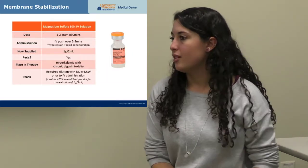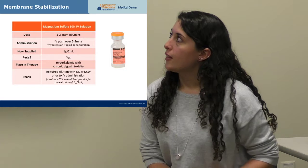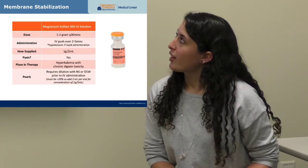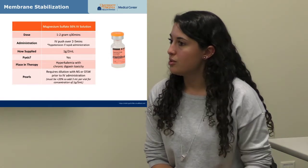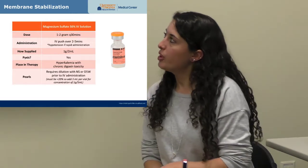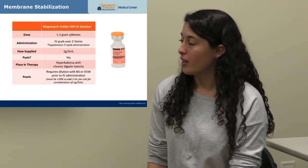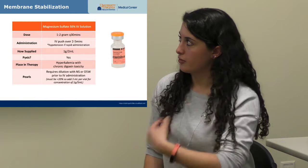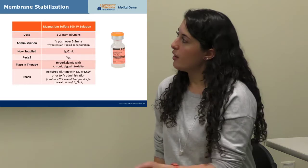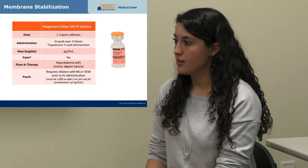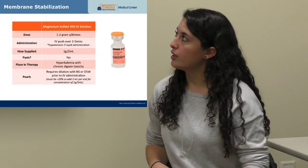If hyperkalemia is caused by digoxin toxicity, use magnesium sulfate for membrane stabilization instead. The vial is a 50% solution; to administer IV safely, add 3 mL of normal saline or D5W to bring the concentration to 1 gram per 5 mL — under 20% — before giving it as IV push. The most important thing to remember is that magnesium sulfate must be diluted before IV administration.